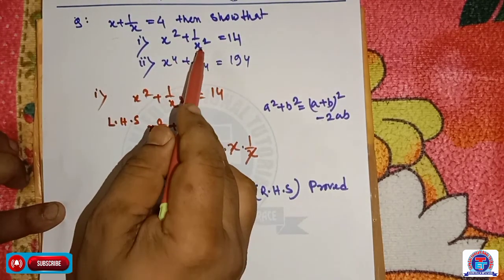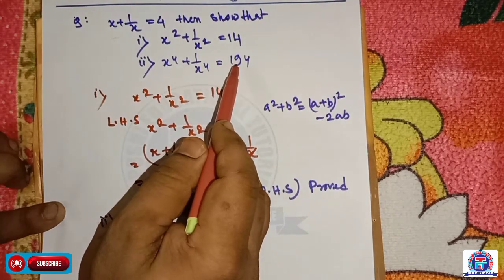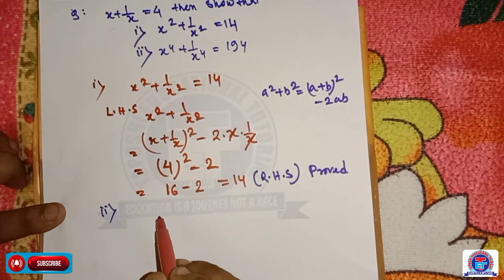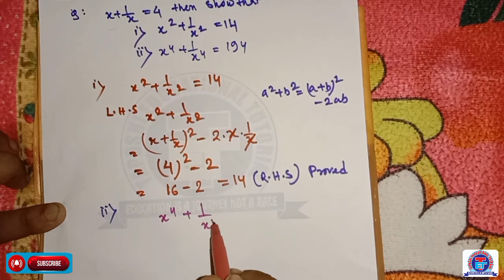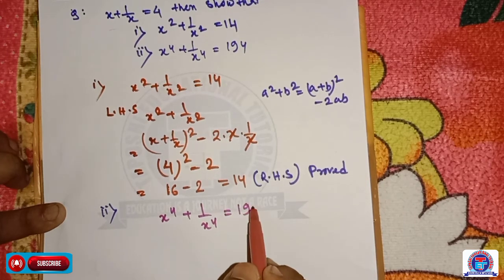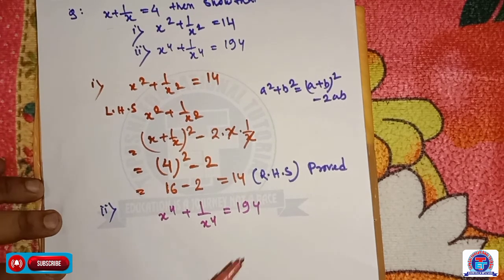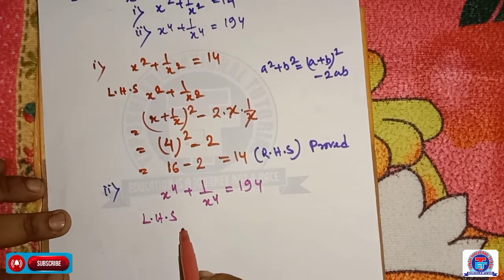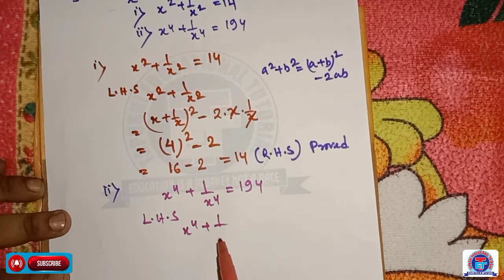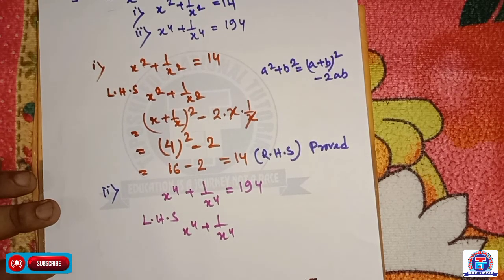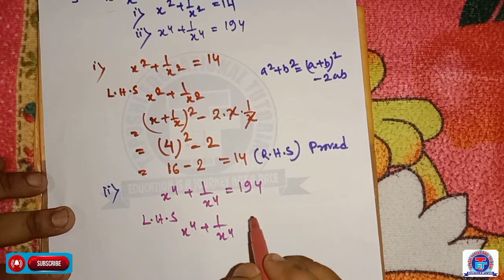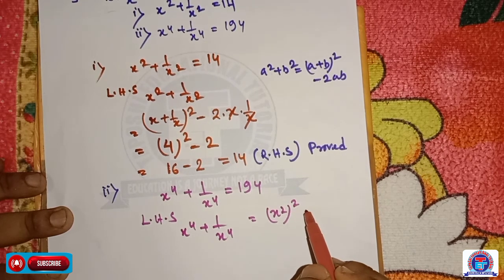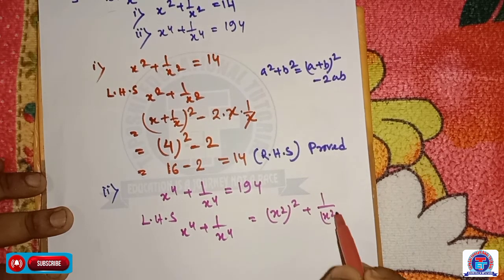We write the left hand side: x to the power 4 plus 1 by x to the power 4. We split this as x square its whole square plus 1 by x square its whole square.